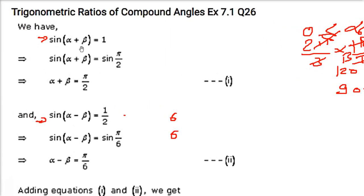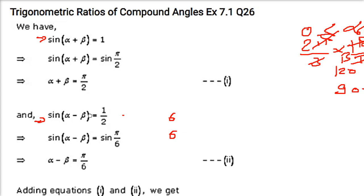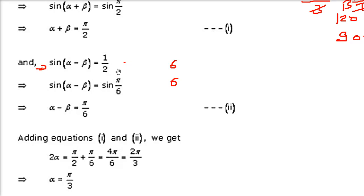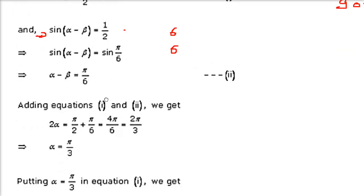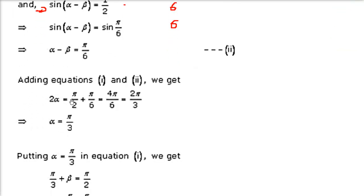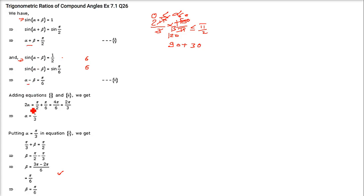sin(α + β) = 1 can be written as sin(π/2), so α + β = π/2. sin(α − β) = 1/2 = sin(π/6) = sin(30°), so α − β = π/6. Now adding the two equations: 2α = π/2 + π/6 = 2π/3, so α = π/3. Substituting back, β = π/2 − π/3 = π/6.